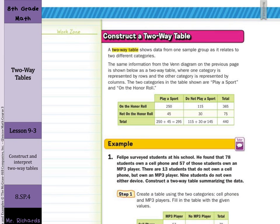Construct a two-way table. A two-way table shows data from one sample group as it relates to two different categories. The same information from the Venn diagram on the previous page is shown below as a two-way table where one category is represented by rows and one category is represented by columns.